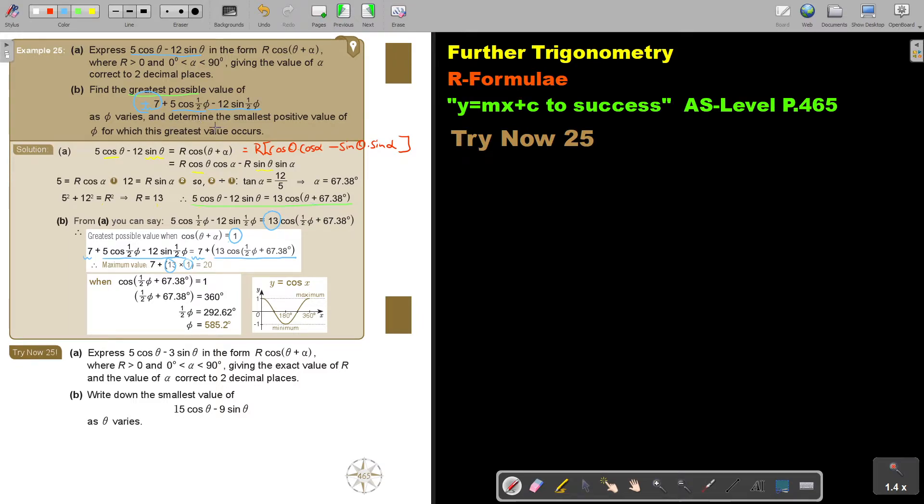But now they don't only want the greatest possible value, so the greatest possible value is that 20, but they also want that new angle. And that new angle, I write it like this, I take it over, I add the 60, I subtract the 67.38, and I multiply 2, and I get my final answer.